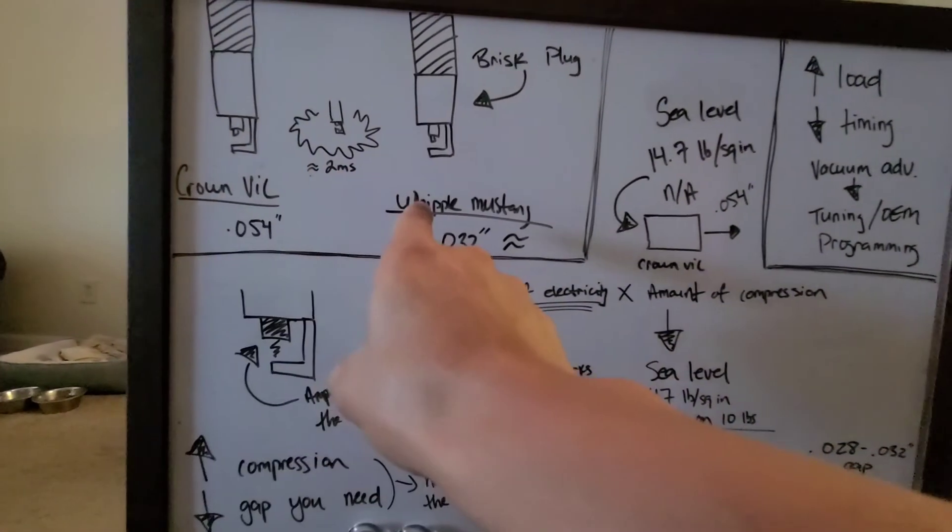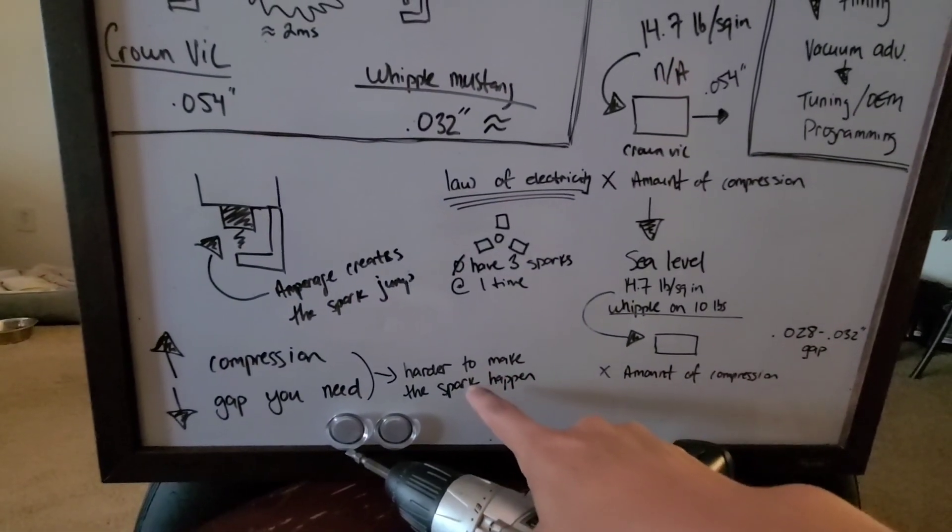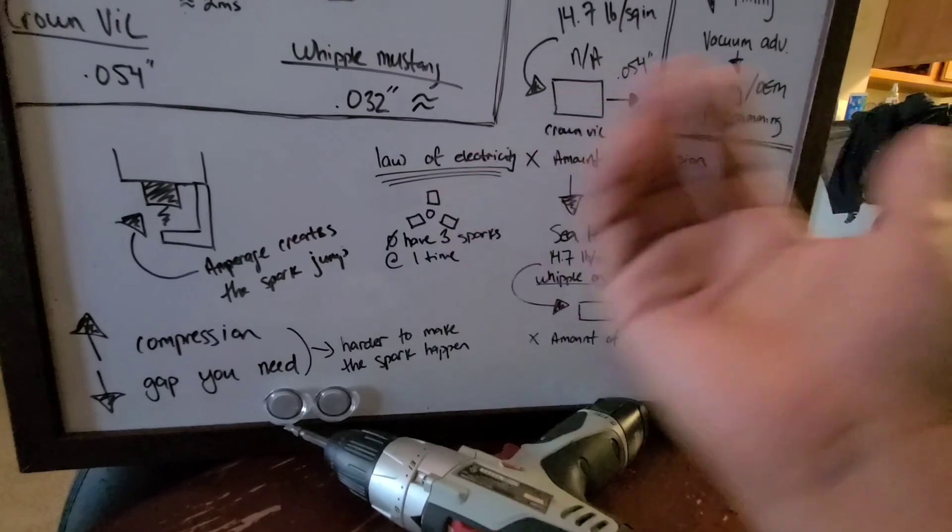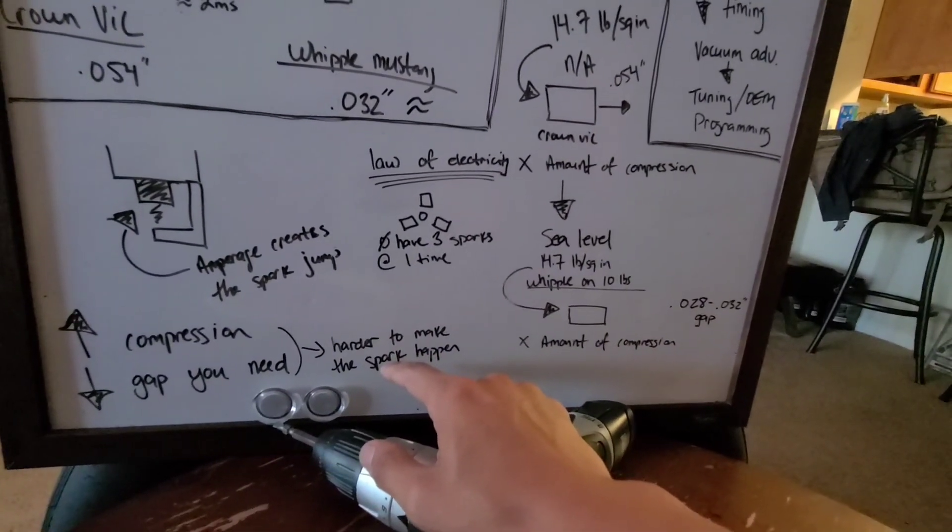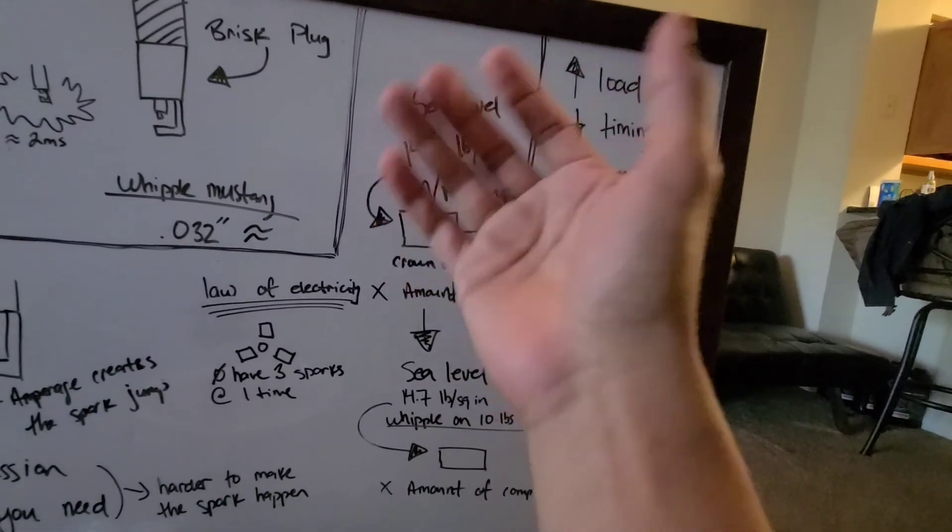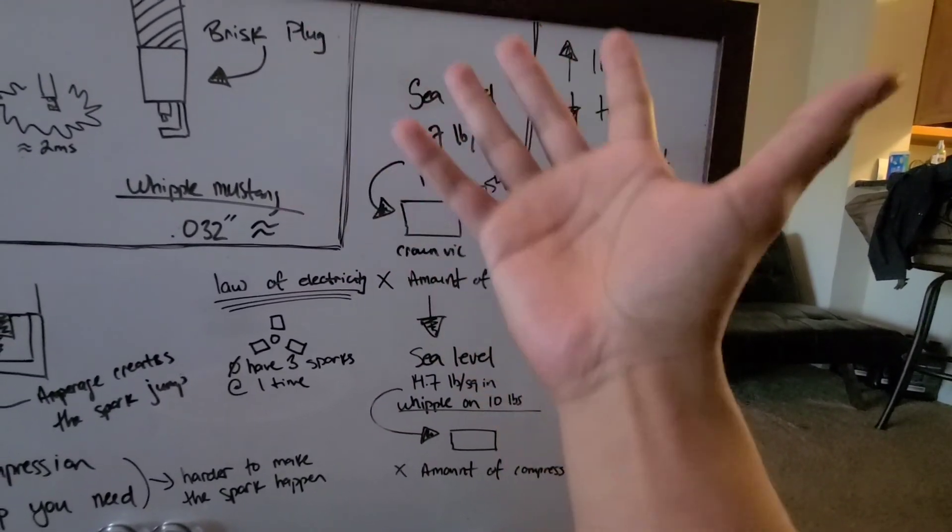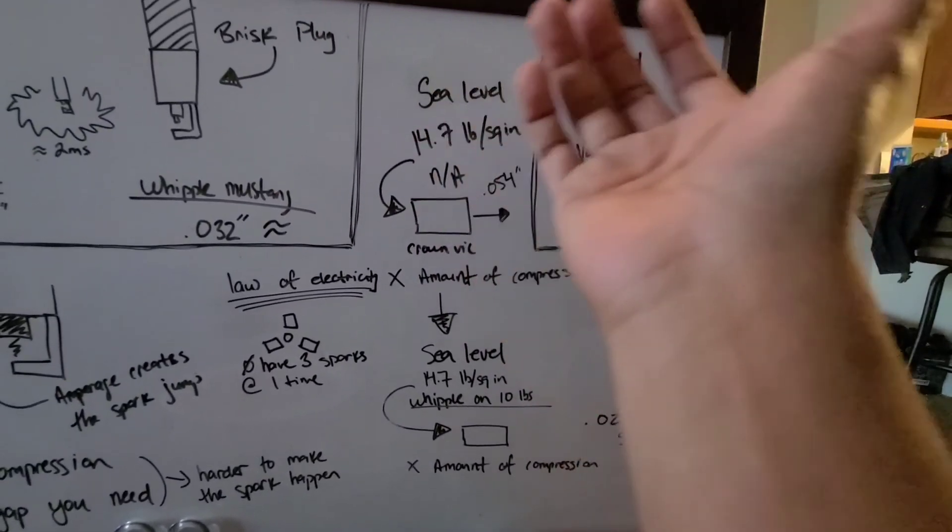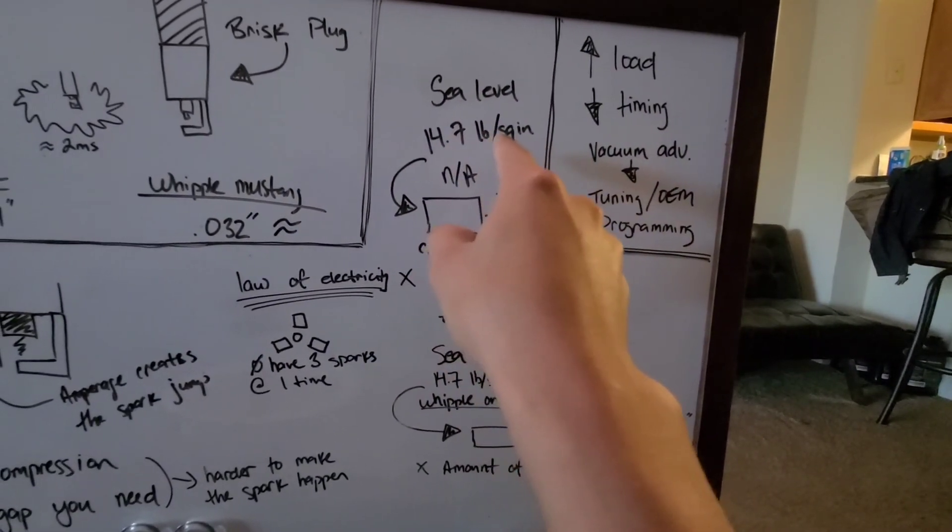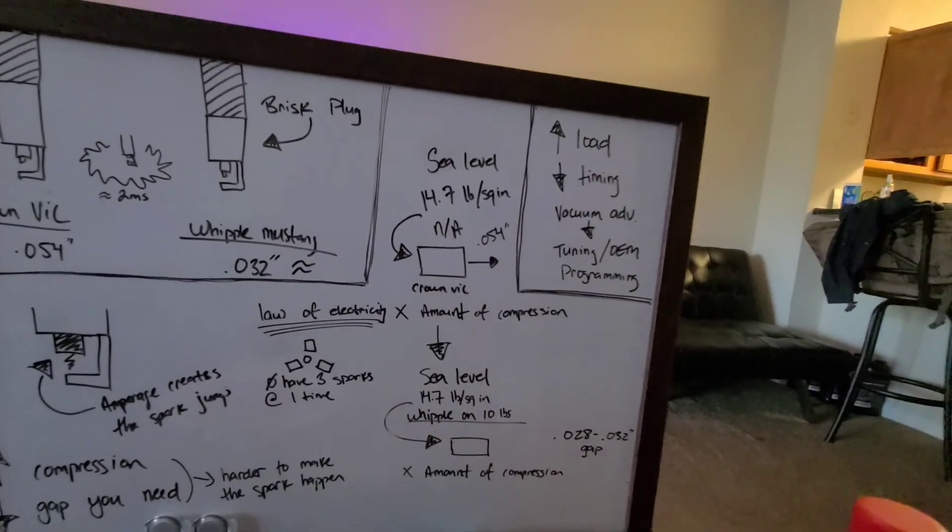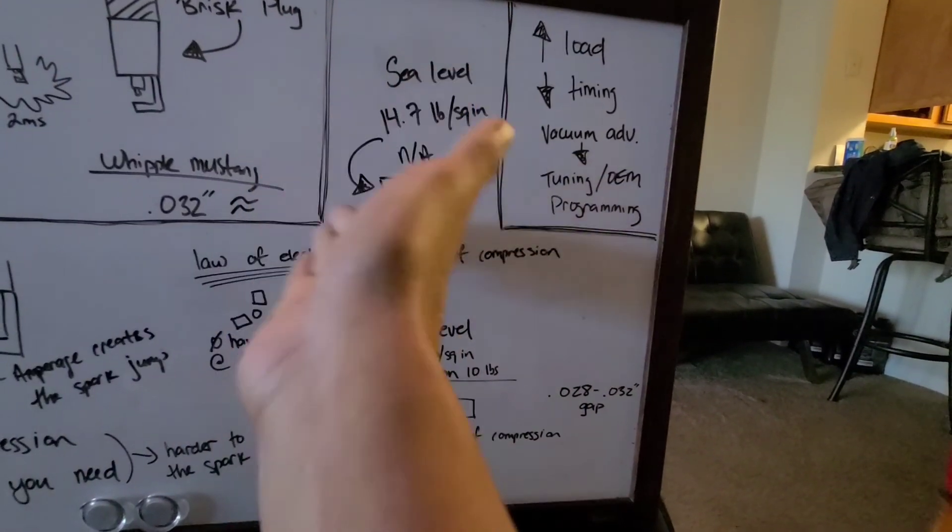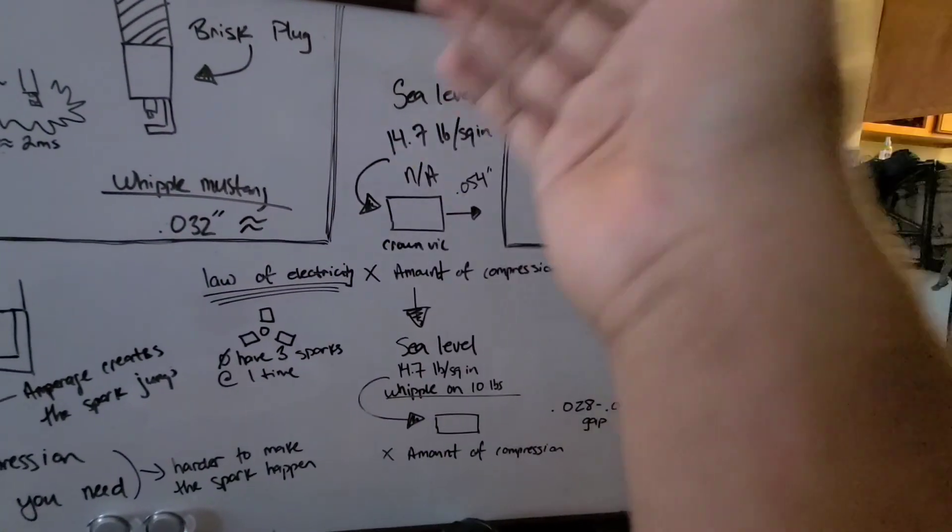The more air you're feeding into this and the higher efficiency this car is, or the motor is, the less gap you're going to need. This is due to the fact you see 54, 32. This is because the more compression you have inside the cylinder, the more you're throwing into the cylinder, air, fuel, everything, it's going to be harder for the spark to actually happen. And if you look here at sea level, we have 14.7 pounds per square inch around us at all times.